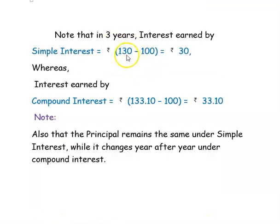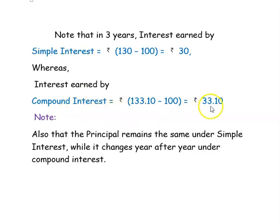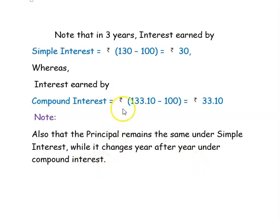In 3 years, the interest earned if invested in simple interest is Rs. 30, and the interest earned if invested in compound interest is Rs. 33.10. Also, the principal remains the same under simple interest while it changes year after year under compound interest. These are the main differences between simple interest and compound interest.